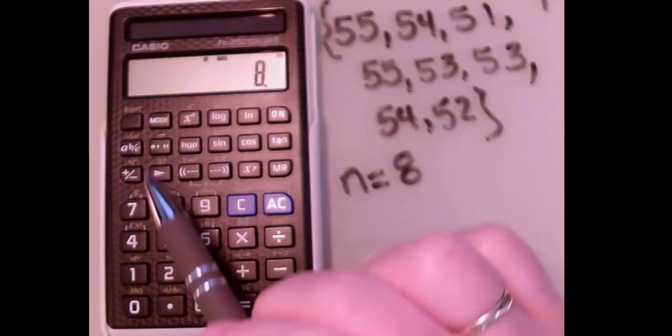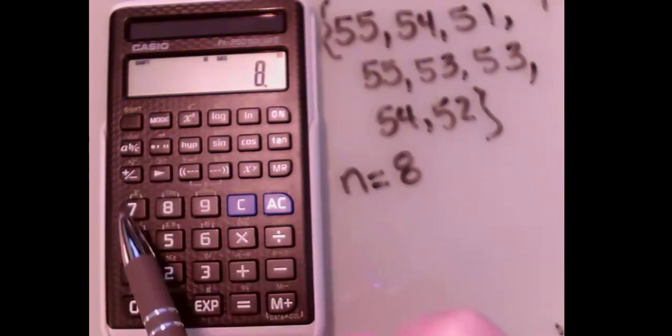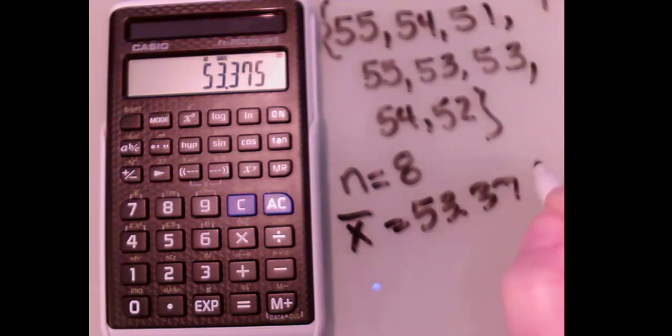what if I want to take the mean? So 7 is the mean. So again, it's in yellow, so I'm going to hit shift 7. So the mean is 53.375.